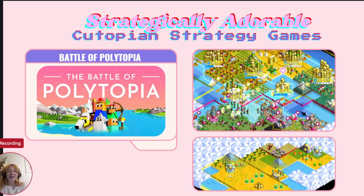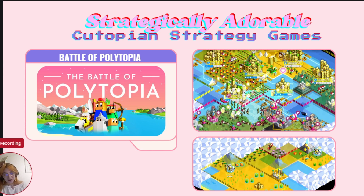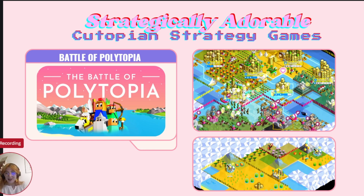Now let's take a look at how cute aesthetics are used in strategy games, specifically in the Battle of Polytopia. The Battle of Polytopia is a minimalist strategy game, often seen as a simplified version of larger strategy games like Civilization, making it accessible to a wider audience. At its core, Polytopia is about expanding your empire, conquering new lands, and exploiting resources — classic themes of imperialism and colonization. However, these serious concepts are wrapped in cute, minimalistic graphics. The bright colors, simple shapes, and playful animations make the act of conquest feel harmless and fun.